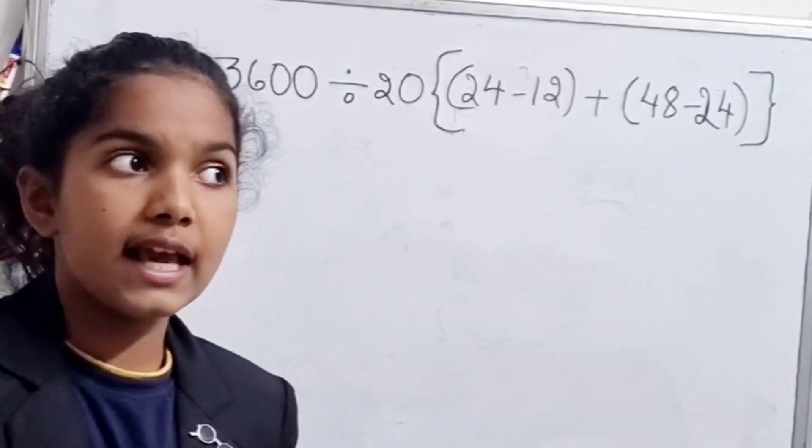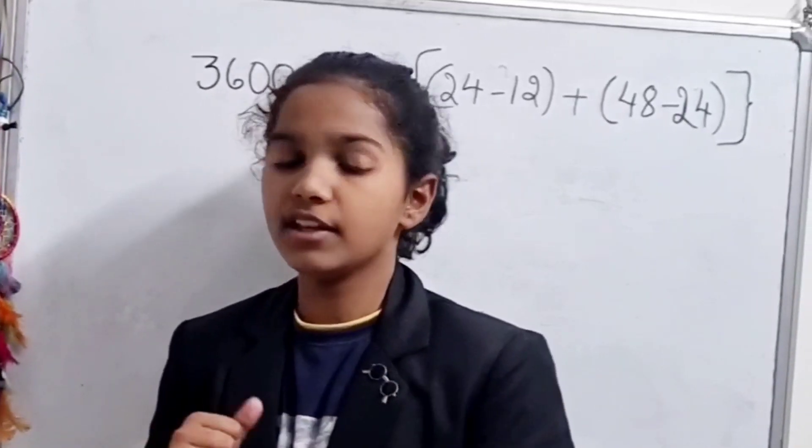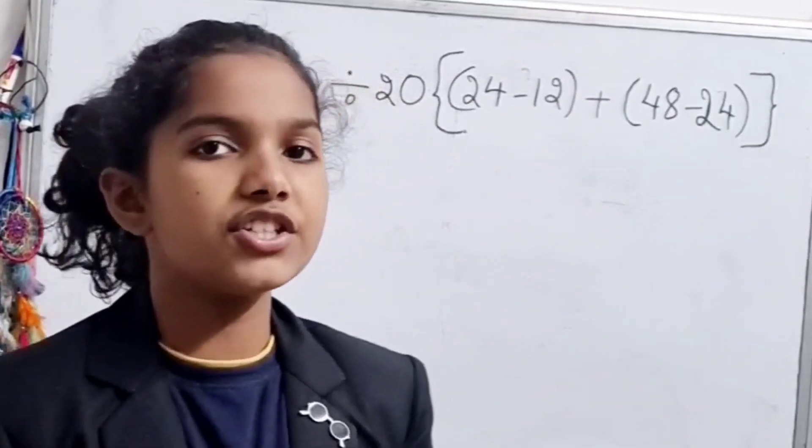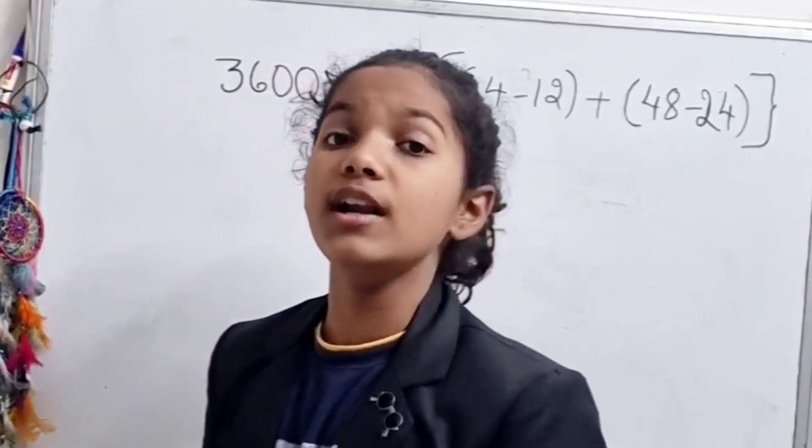I have no rule or order. So for this long sum with multiple operations, we should use a rule and an order called BODMAS.